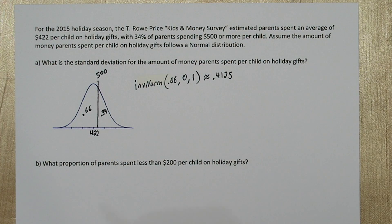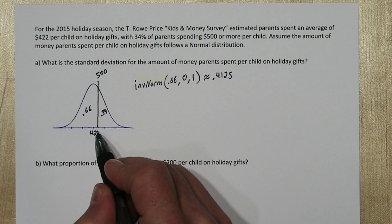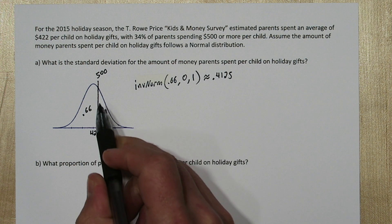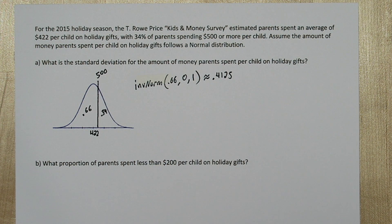Now here's what this means. From the mean, we have to go 0.4125 standard deviations to the right to cut off the lower 66% of the data in the standard normal distribution.